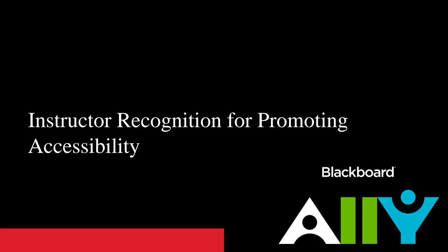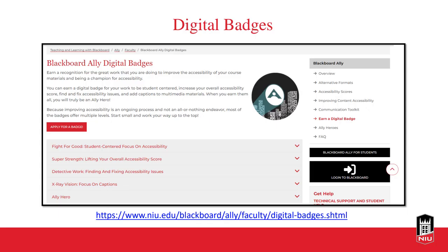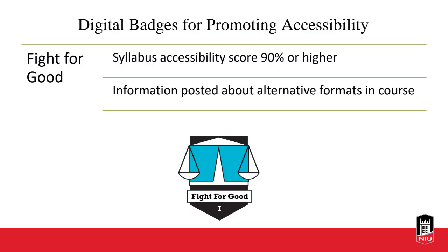There's also recognition for promoting accessibility — digital badges for Blackboard Ally that CITL developed a couple of years ago. The first is 'Fight for Good': your syllabus accessibility score is 90% or higher and you've posted information about alternative formats in your course. This is the easiest way to get started with Ally — make sure your syllabus is accessible and that students are aware of those alternative formats. Your syllabus is generally the first document students access in your course, so if that's accessible, it sets the tone for accessibility.